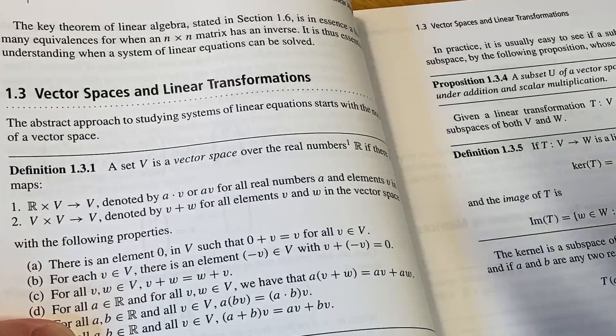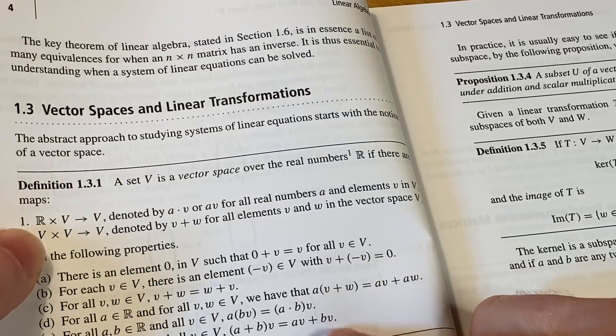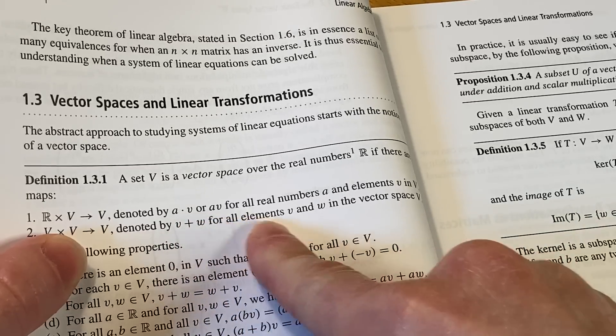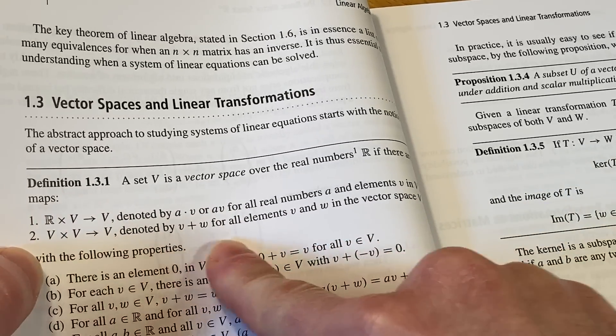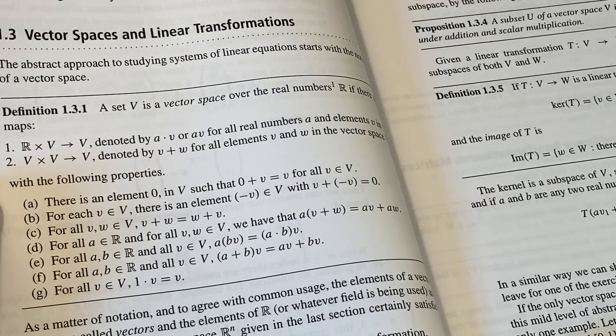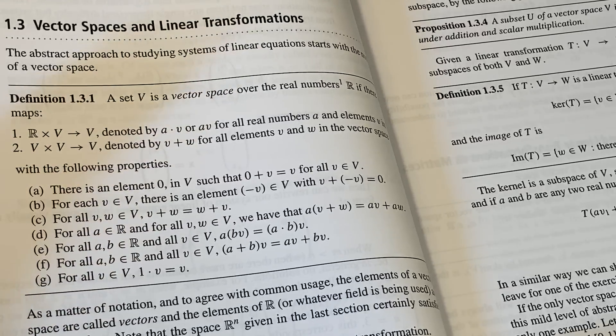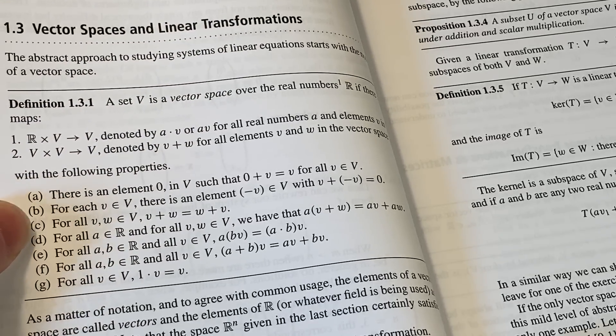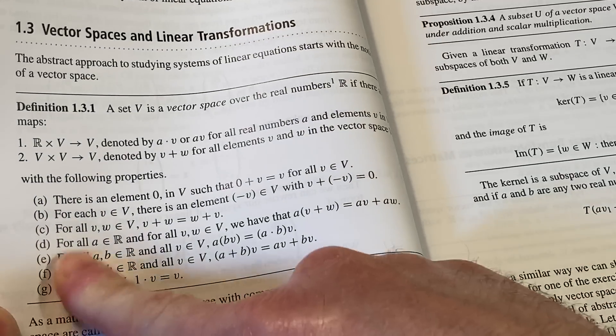Let's look at this. A set V is a vector space over the real numbers R if there are maps. There's a map from R cross V into V, that's scalar multiplication. And then another one from V cross V into V, this is vector addition. Then you have these properties here. So basically it's a set with two operations, one called addition, one called scalar multiplication that satisfies these properties here, A, B, C, D, E, F, G.